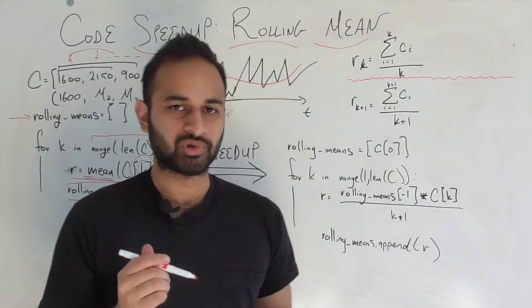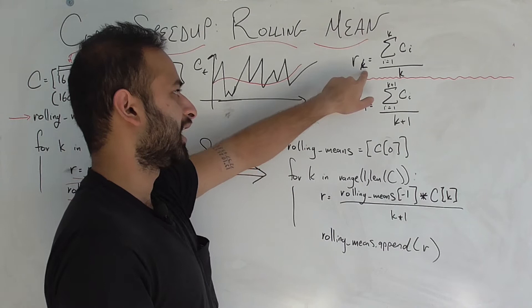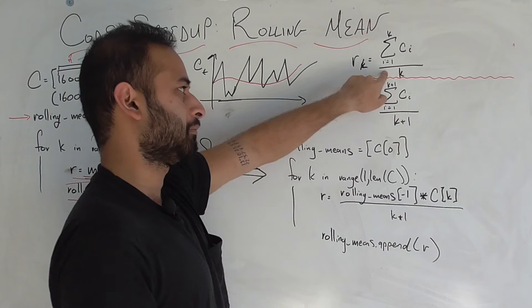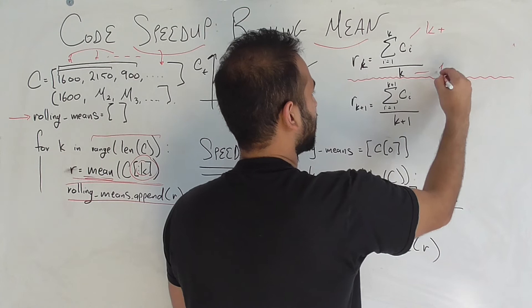But the problem is, how many computations are we doing to get there? To figure that out, let's look at what we actually do in this mean function, which we kind of just took for granted. If we're trying to find the rolling mean for the kth day, we add up all of the calorie counts up until the kth day and we divide by k, right? Pretty simple, that's what a rolling mean does. Now, this requires how many additions? This requires k additions, of course, so we have k additions and one division.